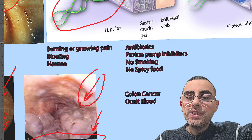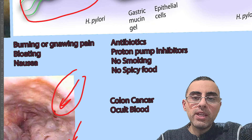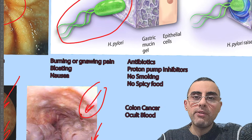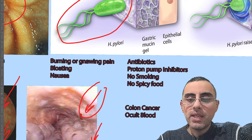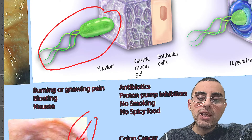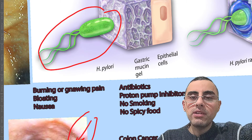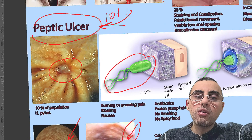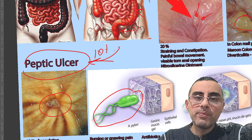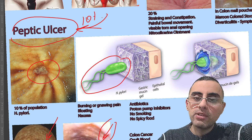The most serious problem when a person has blood in the stool is, of course, colon cancer. Sometimes colon cancer causes blood in the stool, but it is not a very common cause of blood in the stool. It is very serious, but not very common.